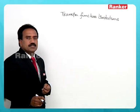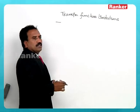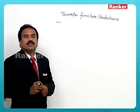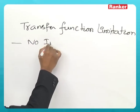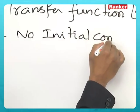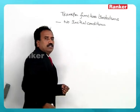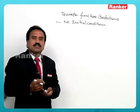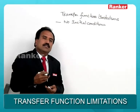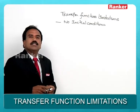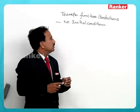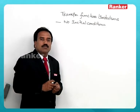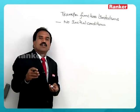Transfer function is the ratio of the Laplace transform of output to the Laplace transform of input, but initial conditions are ignored — no initial conditions are taken into consideration. For example, in an electrical system, a capacitor may have an initial voltage or an inductor may have an initial current. That initial current and initial voltage across energy storage elements is not taken into consideration. So transfer function has that limitation, but in a practical circuit or system, initial conditions cannot always be ignored.